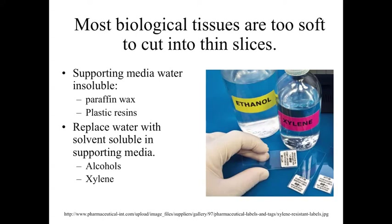Regardless of how we fix these tissues, most biological tissues are going to be too soft to cut into very, very thin slices. So we have to take our biological specimen — which is generally water-soluble because we're an aqueous organism — and support it in something that's insoluble to water, either a paraffin wax or a plastic resin. Since oil and water don't mix, we have to replace the water within the biological tissues with a solvent using things like alcohols and xylenes, getting the tissue into a condition where it will interact with these water-insoluble waxes or plastic resins.